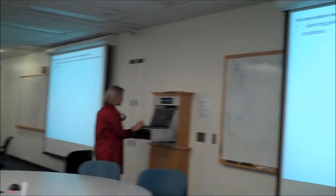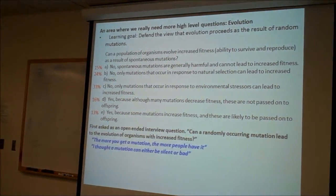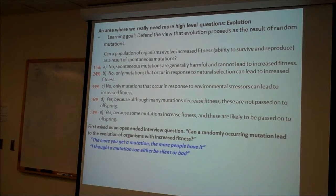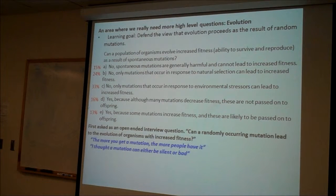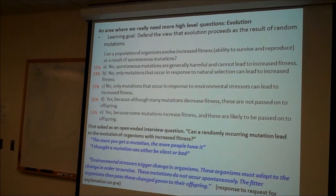This is the evolution question. They have trouble with this randomness idea. They think a mutation has to be bad. They think that somehow you can catch a mutation. The more you get a mutation, the more people have it. And then environmental stressors basically trigger evolutionary responses. These are things you've all heard before — and they're still thinking it here as seniors.